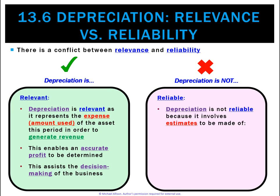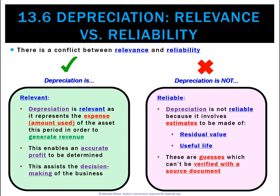Depreciation is very unreliable, and the reason why is it makes a couple of guesses. The two guesses we make when calculating depreciation are: one, what's the residual value — how much do we think we'll sell it for? Well, that's just a person's opinion. And second, how long are we going to be able to use the asset for? Again, that's another guess. We've got no idea whether the residual value or useful life are going to be correct, and there's actually no source document to back that up.